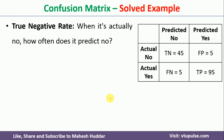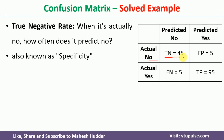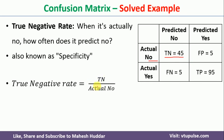The next metric is true negative rate — when a particular example is negative, how often it is predicted as no. In this case it is predicted as no in 45 examples out of 50. So true negative rate is 45 divided by 50, equivalent to 90%, and it is also called specificity.